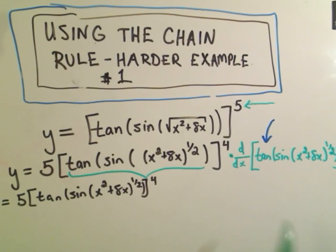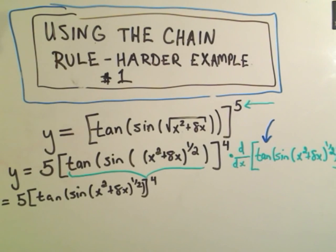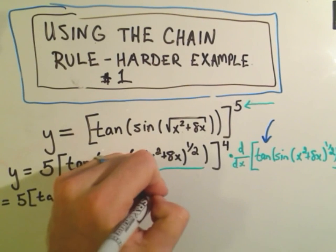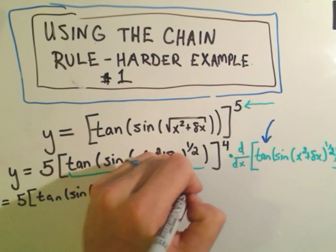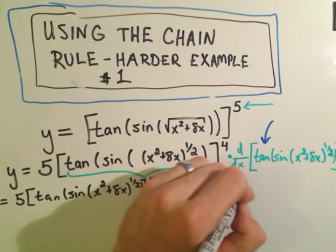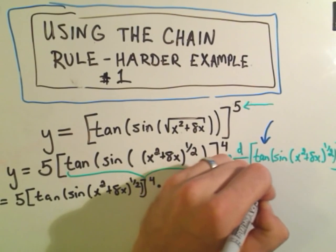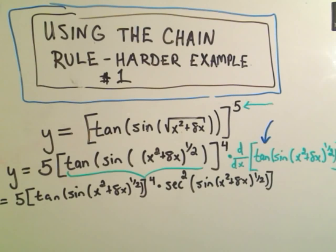And now, if I multiply that by the derivative of the inside, again, I have to take the derivative of the tangent part. Well, the derivative of tangent is secant squared, so that's secant squared, and we leave the inside alone. So the sine of x squared plus 8x raised to the one-half power. Okay, and now I have to move on the inside of that.